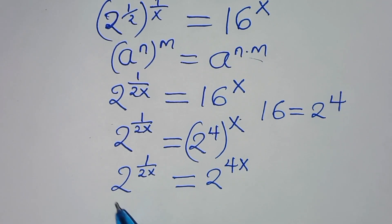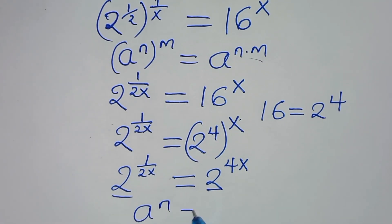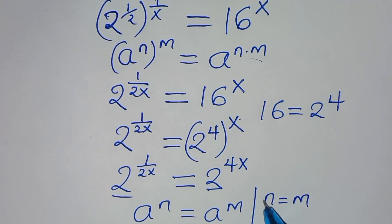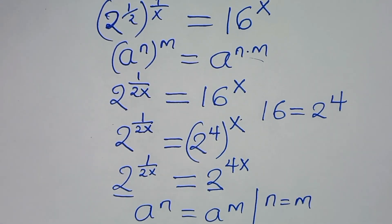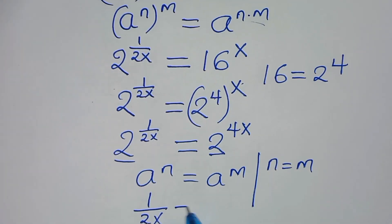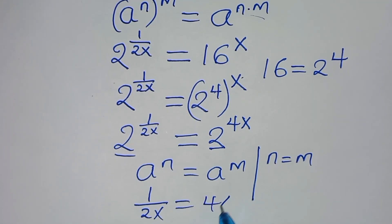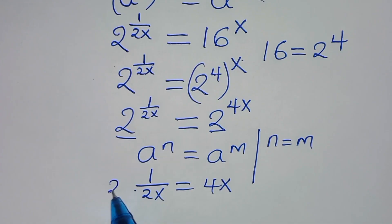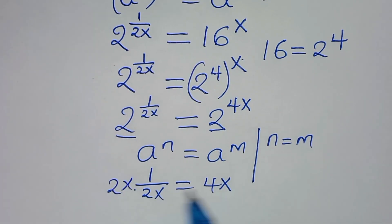Now since the bases are common — that is, if a to power n equals a to power m, then the exponent n equals m — from here we have that 1 over 2x is equal to 4x.